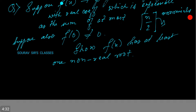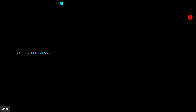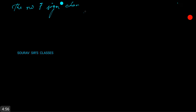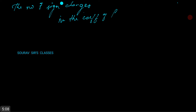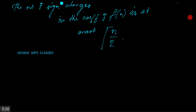The number of sign changes in f(x) is at most ceiling(n/2) minus 1, and likewise the number of sign changes when we consider f(-x) instead of f(x) is at most ceiling(n/2) minus 1.